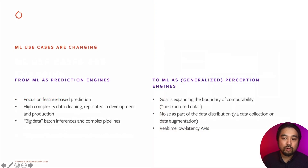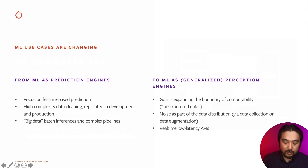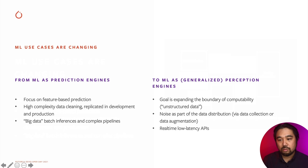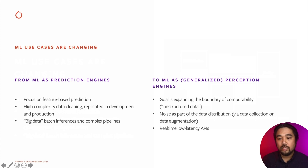Recently, you see more and more projects that take a different shape. Rather than just being prediction engines, they're sort of generalized perception engines — perception in the sense that the role of a machine learning model is to shift the boundary of what you can compute on. To enable you to compute on text through NLP, process images through computer vision. In these use cases, noise becomes part of the data distribution for the model to reflect, rather than being cleaned up upstream. You also have this shift from pipelines to real-time, low-latency APIs.